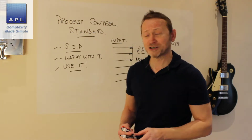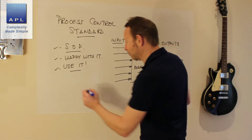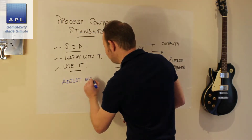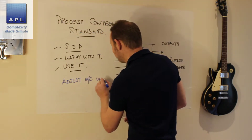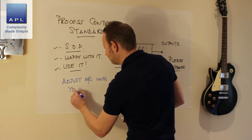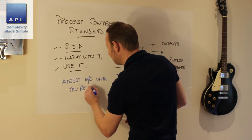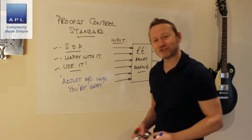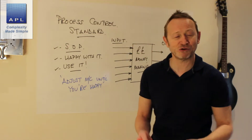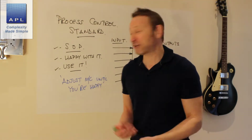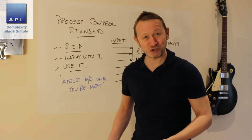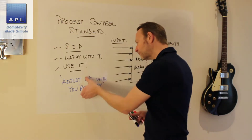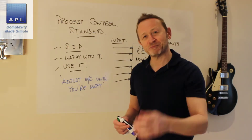So, things to avoid. What I want you to avoid are things like 'adjust the machine until you're happy.' Adjust the machine until you're happy — what's that saying? It's basically saying we haven't got a clue. Play about with the machine until something good happens. It's no standard at all. We want to get standards which are clear and unambiguous.